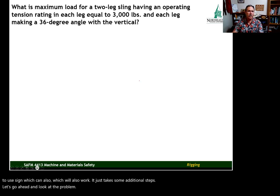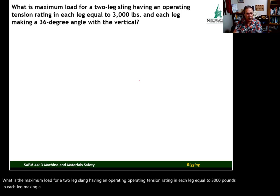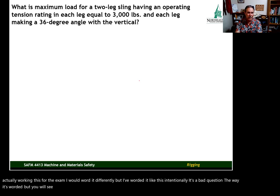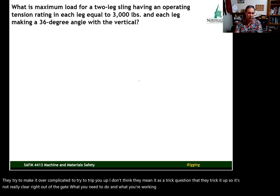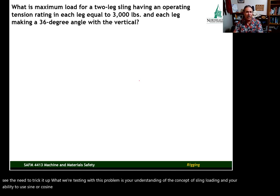The problem: what is the maximum load for a two-leg sling having an operating tension rating in each leg equal to three thousand pounds, and each leg making a 36-degree angle with the vertical? Right out of the gate, the wording of this question isn't ideal, but you will see items like this on the CSP exam. They try to make it over-complicated to trip you up. What we're testing here is your understanding of sling loading and your ability to use sine or cosine to calculate it.